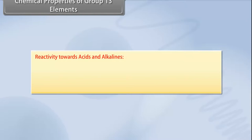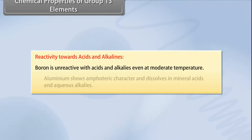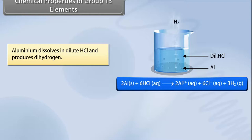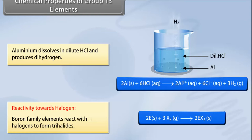Reactivity towards acids and alkalis: Boron is unreactive with acids and alkalis even at moderate temperature. Aluminium shows amphoteric character and dissolves in mineral acids and aqueous alkalis. Aluminium dissolves in dilute HCl and produces dihydrogen. Reactivity towards halogens: Boron family elements react with halogens to form trihalides.